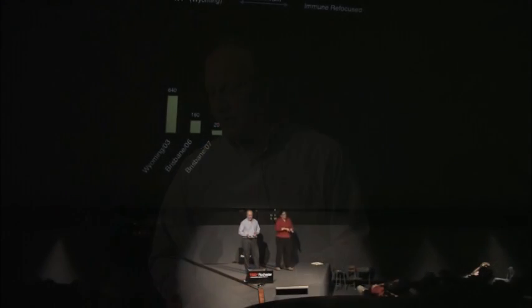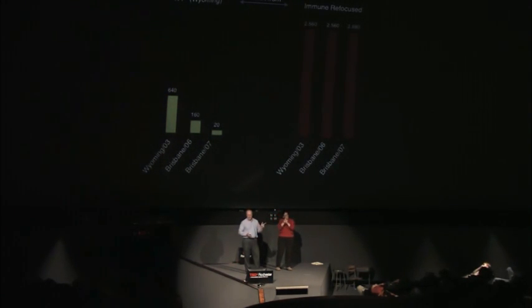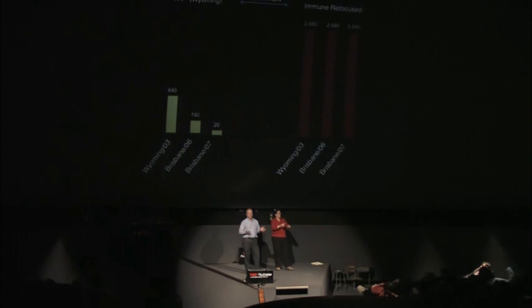As you can see, these viruses evolved later—Wyoming started in 2003, Brisbane in 2006, and another in 2007. We introduced an immune-refocusing mutation in one site of one of the major decoys, and what we were surprised to find was such a great immune response to the same Wyoming strain. But even more importantly, we had really good neutralizing responses to the two Brisbane strains that evolved much later.